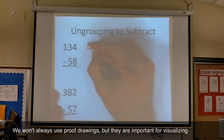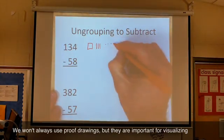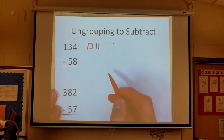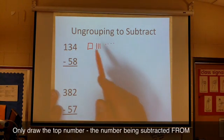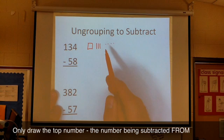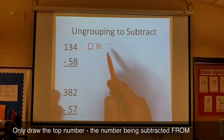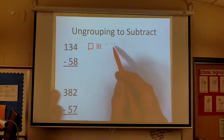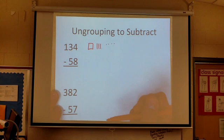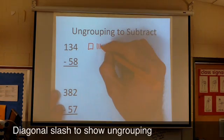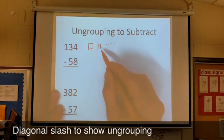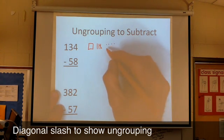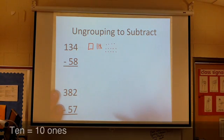One of the very first mistakes kids will make is they'll draw both numbers. When you're subtracting, you don't need to do that. We're actually taking 58 away from 134 here. We start by trying to take away 8. How we do that is just cross them off. The problem is I don't have 8 to take away here. Where can I get more ones? I can trade in one of these tens. I do that by making a diagonal slash in it. I'm going to trade that ten in for ten more ones.